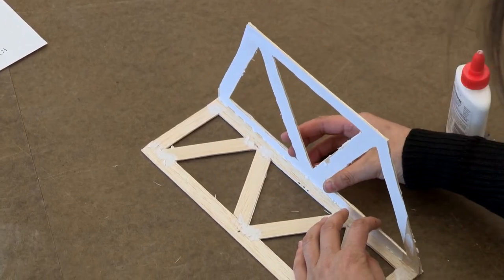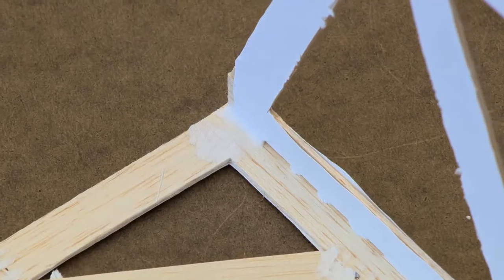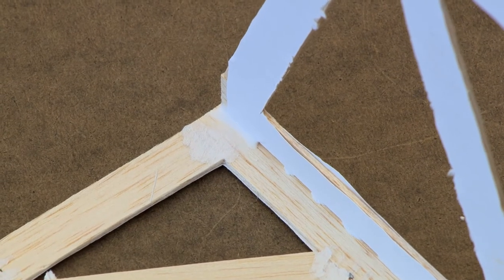So once you have the side in the position you want, you're going to add some extra dollops of glue to the corners to add a little bit of additional support.